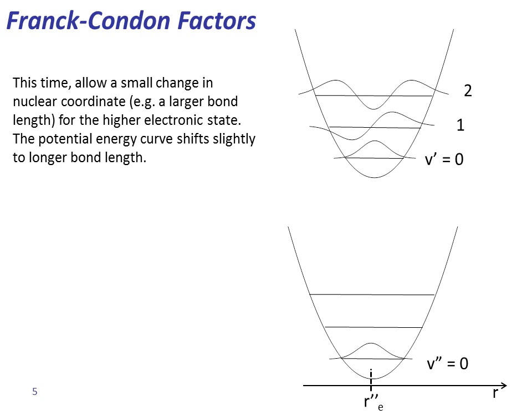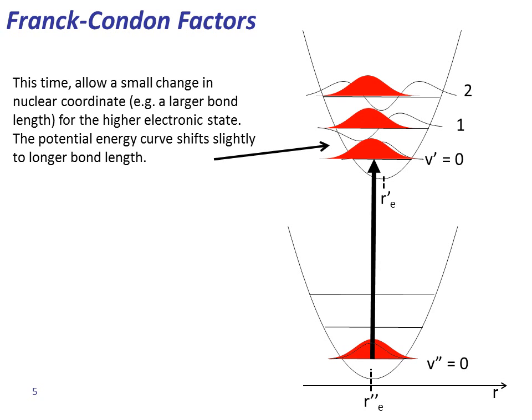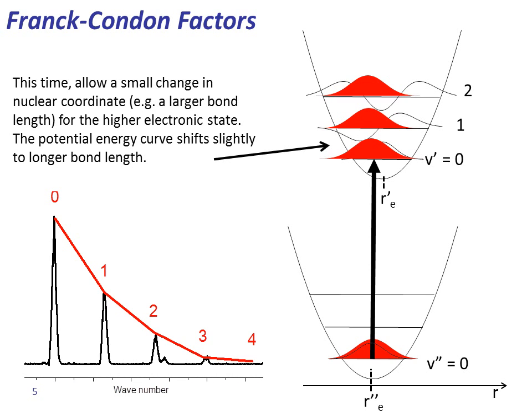Let's look into the Franck-Condon factors in a bit more detail. This time, allow a small change in nuclear coordinate — that is, a longer bond length for the higher electronic state. The potential energy curve shifts slightly towards the longer bond length. You would notice that the overlap between vibrational wave function v double prime equal to zero and v prime equal to one is no longer zero, since the positive and negative overlaps are no longer the same. As a result, peak one, which represents the transition from v double prime equal to zero to v prime equal to one, is now of a finite quantity and has an appreciable intensity.